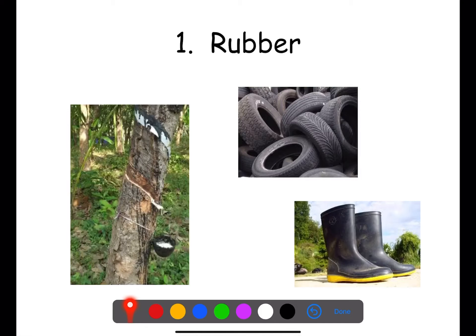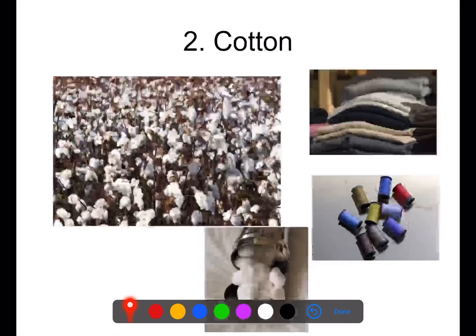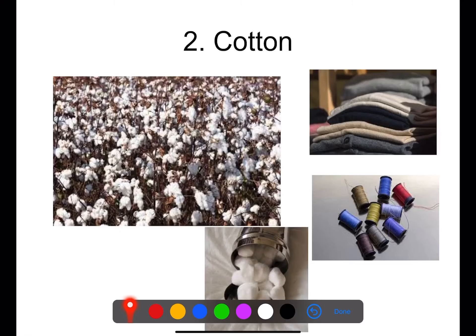For plant number one, this was a rubber tree. You can see the rubber being tapped off into a basin, and rubber can be used to make things like welly boots and car tires. The second plant was a cotton plant — cotton can be used to make cotton wool, thread or clothes. It's a very common use of cotton.